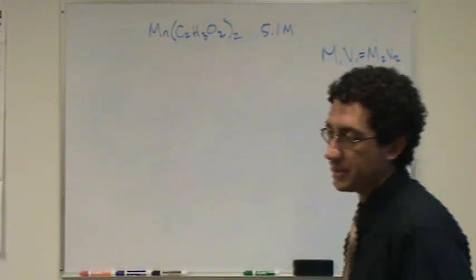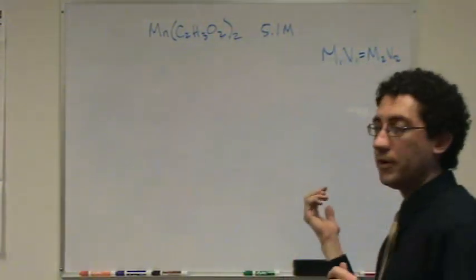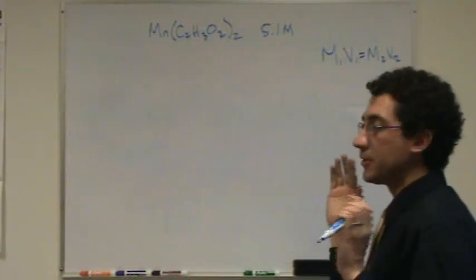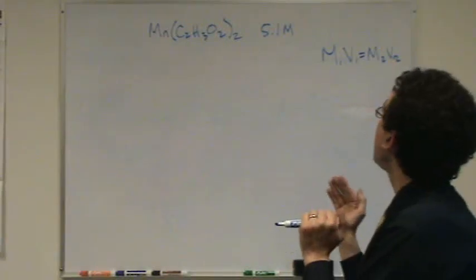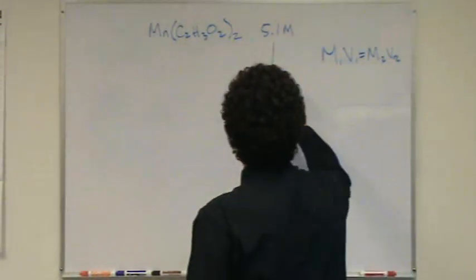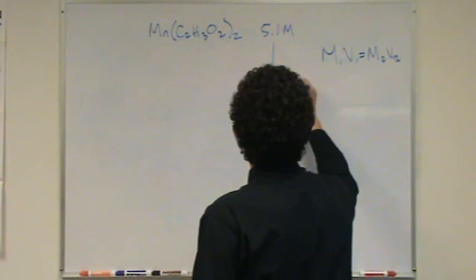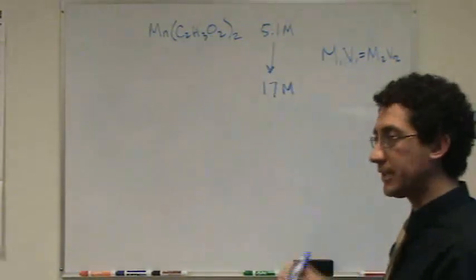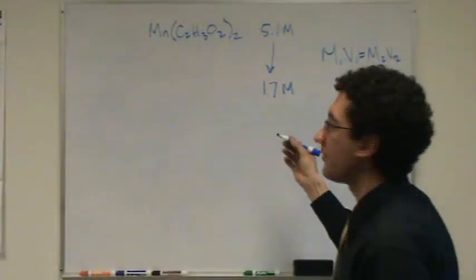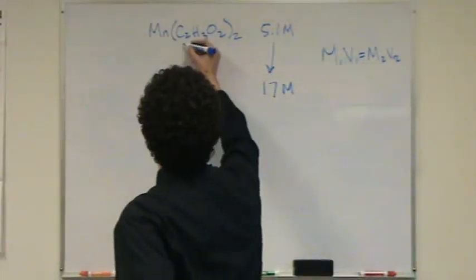A number of ways you can ask this. One way is, let's say, I want to dilute this to make it down to 1.7 molar. Okay, so I want to decrease the molarity. Definitely the volume has to change. I have to be given the volume, so let me make up a number for the volume here.